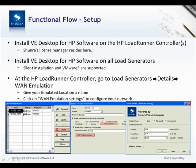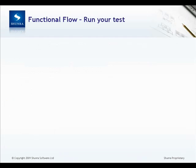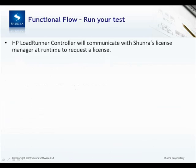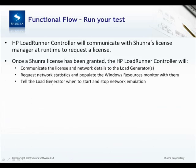Once each of your load generators has been configured, you can run your test. Once you click start, the LoadRunner controller will communicate with Shumra's license manager to request the license. Once that license has been granted, the LoadRunner controller will communicate that and the network details to each of the load generators in your test.